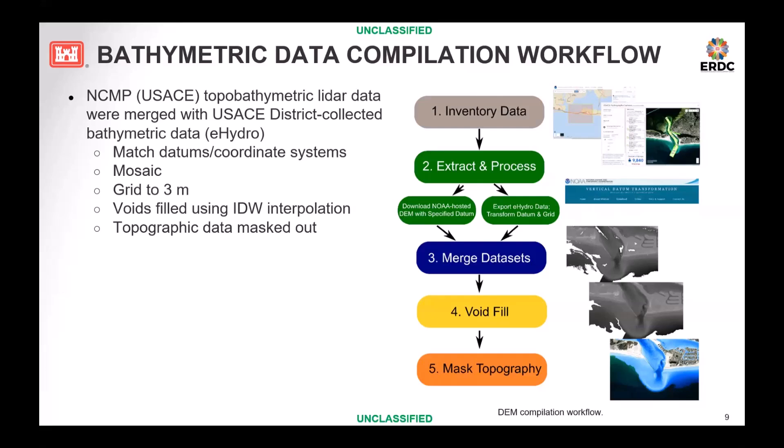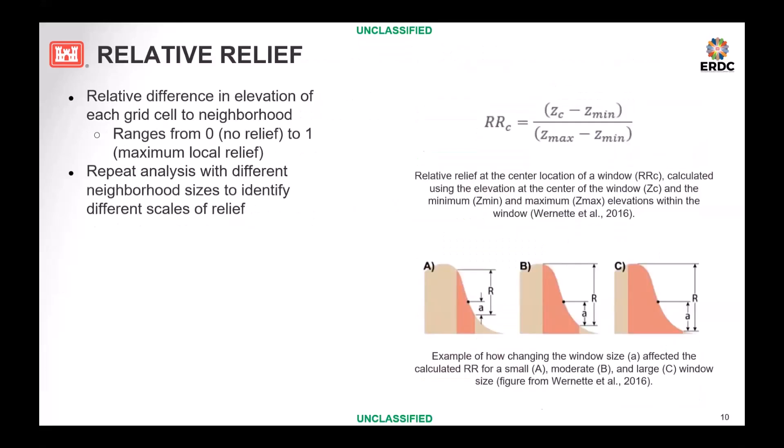Another tool we've been working on is the relative relief analysis developed by Werner et al. in 2016. It basically calculates the relative difference in elevation of a grid cell to its neighborhood in order to identify geomorphic features in surface datasets. This relative relief ranges from zero, meaning no relief, to one, which is the maximum local relief in a given neighborhood or window. You can repeat this analysis with different window sizes to identify different scales of relief — changing the window size affects your relative relief output.